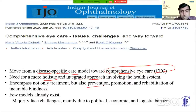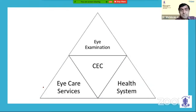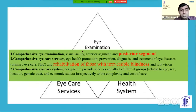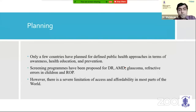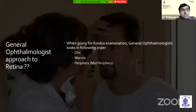The triad of comprehensive eye care includes visual acuity, anterior segment, and posterior segment examination, as well as promotion, prevention, diagnosis, treatment of eye diseases, and rehabilitation of those with irreversible blindness using low vision aids. Only a few countries have planned defined public health approaches; screening programs have been proposed for DR, AMD, glaucoma, and refractive errors. For the general ophthalmologist approaching the retina, I have divided it into three groups: looking at the disc, then the macula, then going towards the periphery.